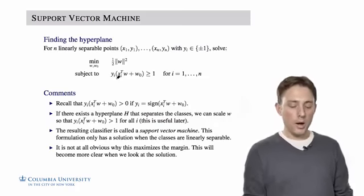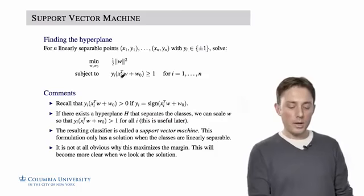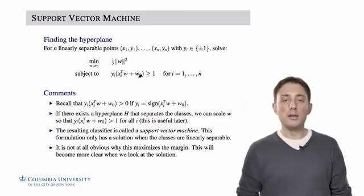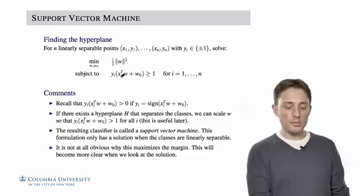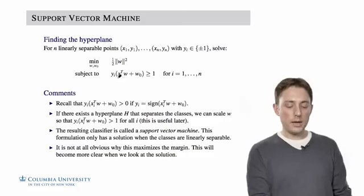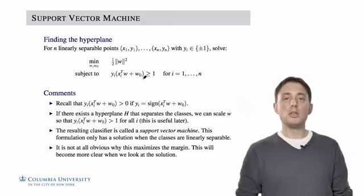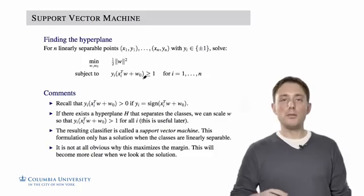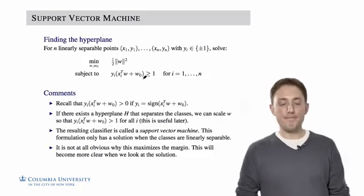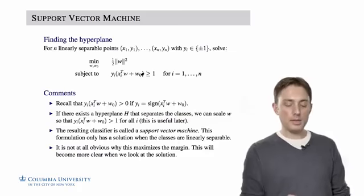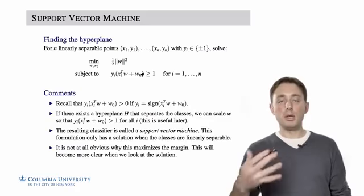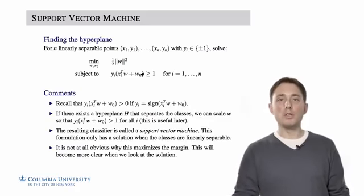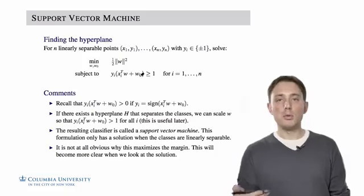Subject to the product of YI with XI transpose W plus W0 is greater than or equal to 1. So what does this mean? Remember, with a linear classifier, that we take the sign of this function to be the predicted label of observation XI. And so if the sign of this thing is positive, then we predict that it's plus one. If it's negative, we predict that the label is minus one. And we want to get the label right.